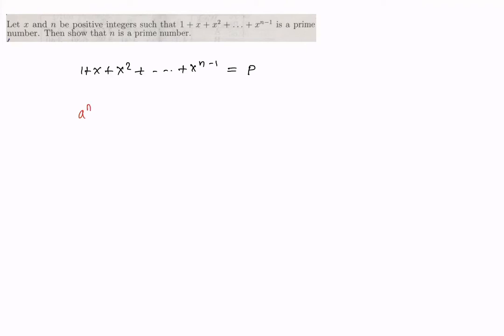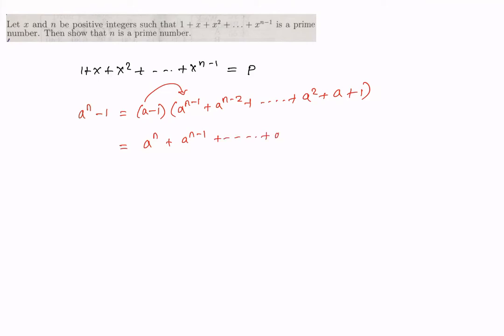This problem depends on a very simple factorization. If you have a^n - 1, then you can always factorize it as (a - 1) times (a^(n-1) + a^(n-2) + ... + a + 1). If you multiply it out with a, you get a^n, a^(n-1), down to a² and a.